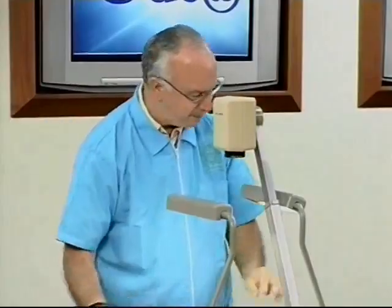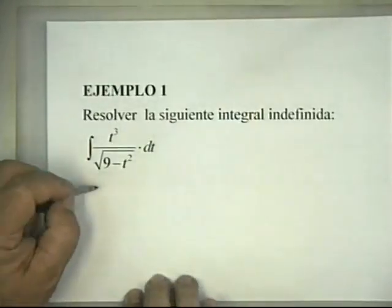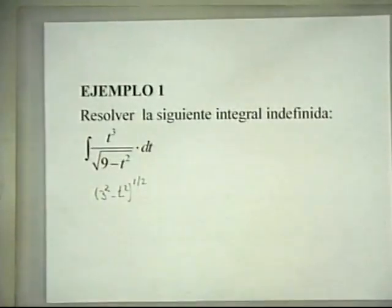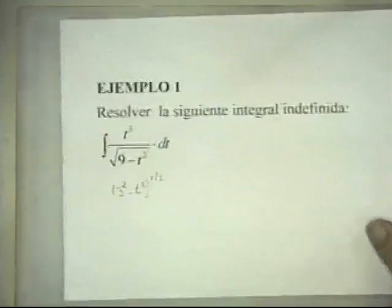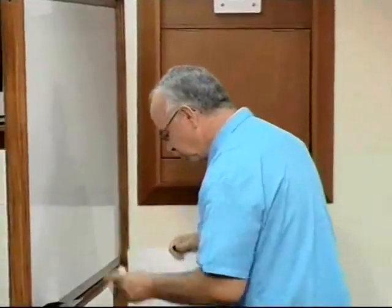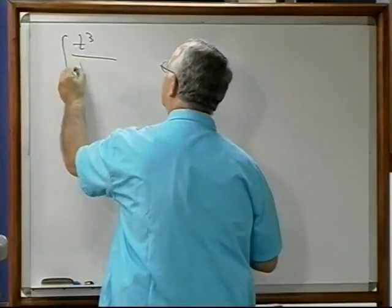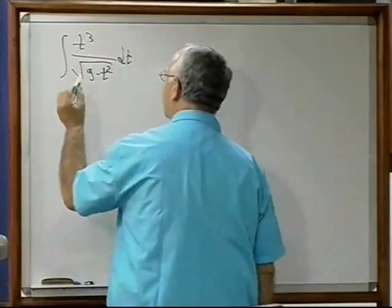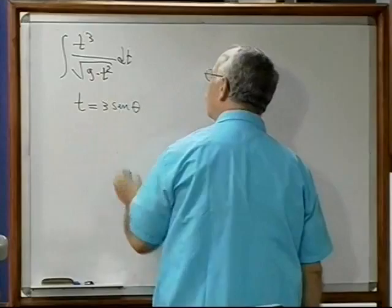La técnica establece que cualquiera de las sustituciones u igual a a·seno(θ), o u igual a a·coseno(θ), transforma la integral inicial en una integral que contiene potencias de funciones trigonométricas. Ilustremos esta situación con el siguiente ejemplo: resolver la integral indefinida de t³ sobre la raíz cuadrada de 9 menos t². Hacemos la sustitución t igual a 3·seno(θ).